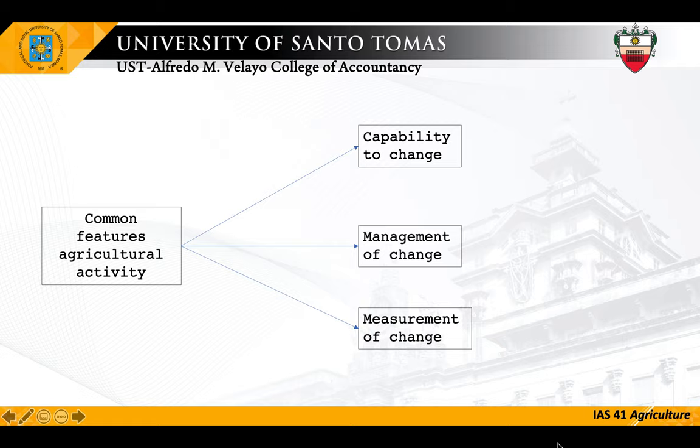The difference between ocean fishing and fish farming is that in fish farming we manage the growth, production, and procreation — in short, the biological transformation of the assets. Whereas in ocean fishing, we do not feed the fish in the ocean before we harvest them. So there is no management of change in ocean fishing. Therefore, ocean fishing is not considered an agricultural activity.